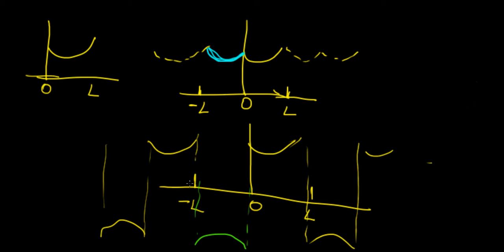So depending on our choice in terms of the expansion, we're going to choose one of two possibilities. For the even case, our Fourier series is going to be a Fourier cosine series.